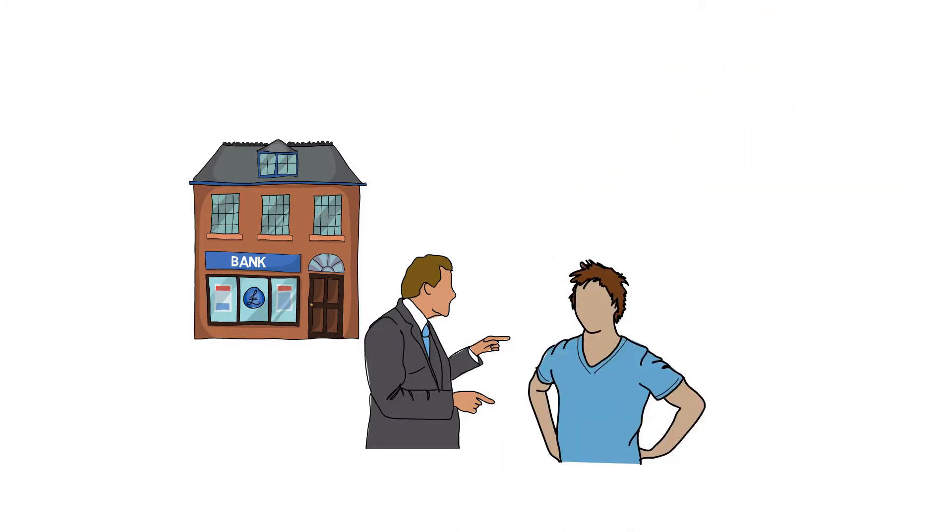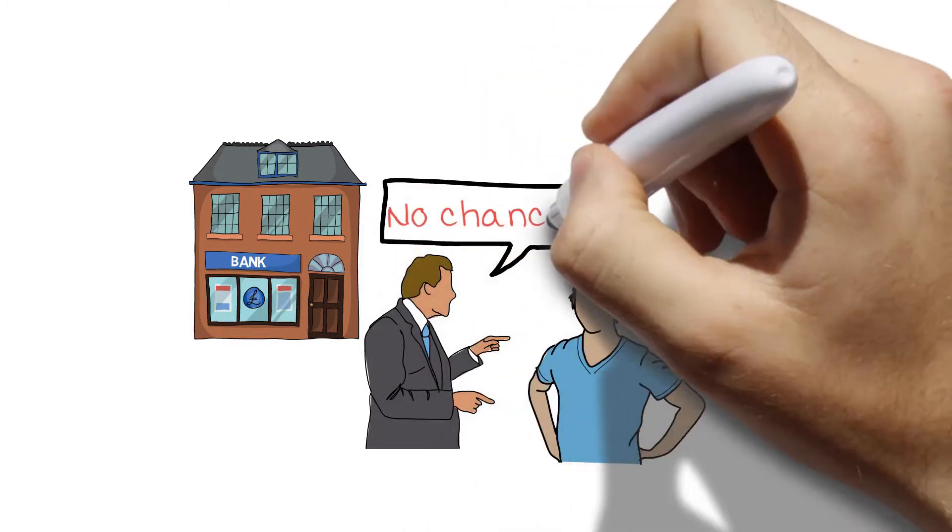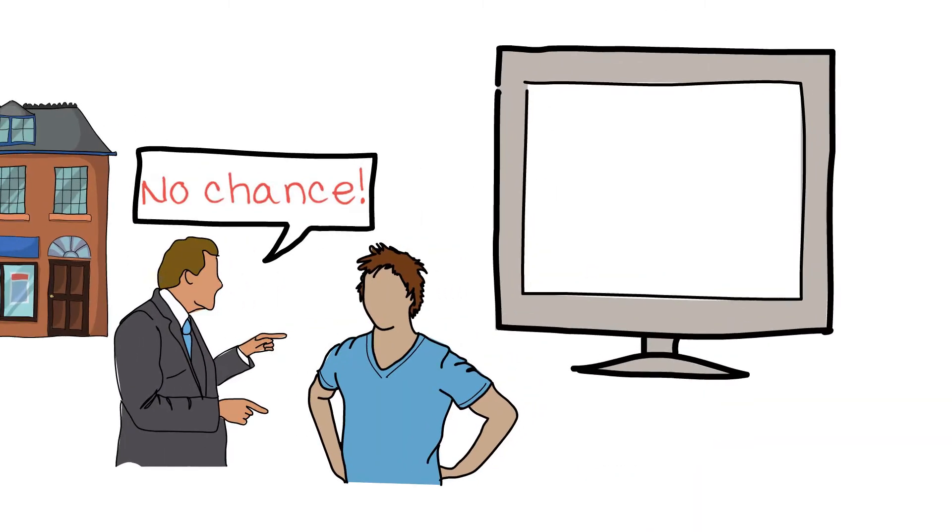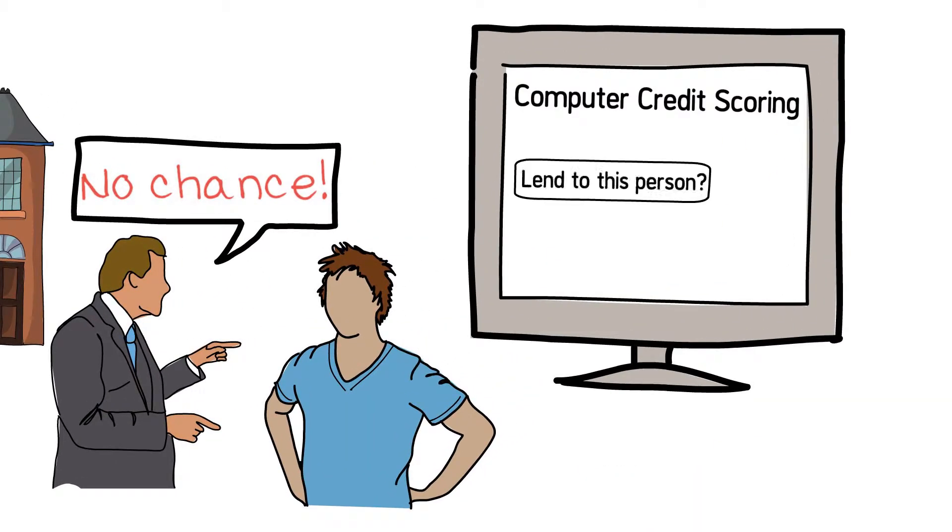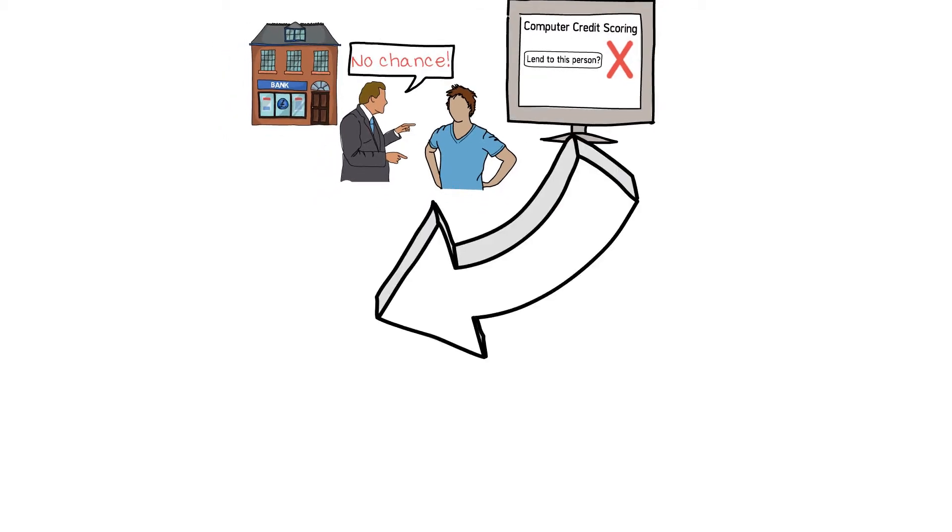Have high street banks and building societies been rejecting your applications for an unsecured loan? Then blame computer credit scoring. But what's the solution?